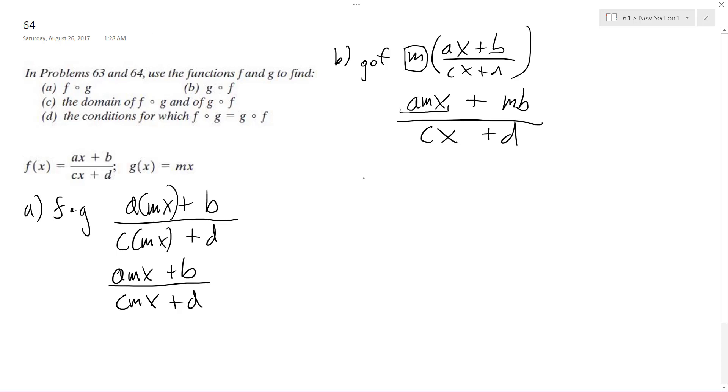So what's the domain? All reals with exception of x cannot equal negative d over c. What this means is if you have negative d over c times c, the c's cancel out, so it's just one. You get negative d plus d, which gives you zero. And that doesn't work - that would give a zero on the denominator. So x cannot equal negative d over c.